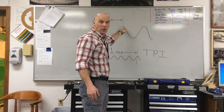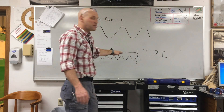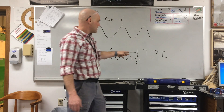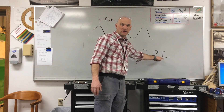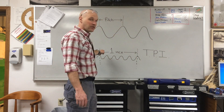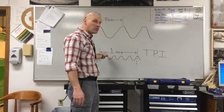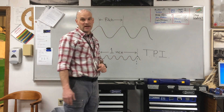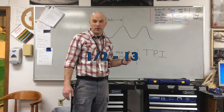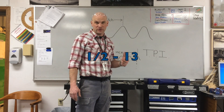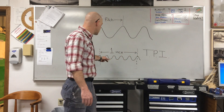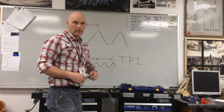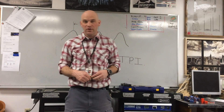TPI is threads per inch — that's the standard classification. Threads per inch is how many threads we have in one inch. An example of that would be like one-half by 13, where there are 13 threads or points in a one-inch space.